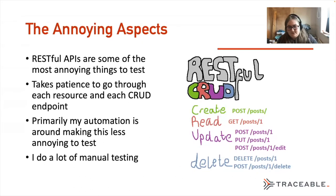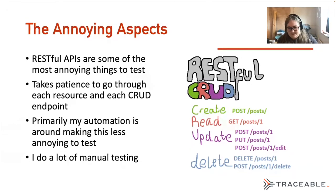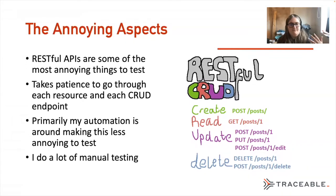For every resource you might have — like on a social media website like Twitter — you've got tweets, replies, accounts, usernames, direct messages, people you follow, people following you. That's seven API endpoints. Then for each of those you have four different CRUD operations, so seven times four. And that's actually a smaller API. A proper API in a mobile app can have literally 50 API endpoints. It takes patience to go through every single one. My automation is primarily about making that process less annoying. I confirm vulnerabilities manually, but getting through all those CRUD endpoints is primarily what I'm trying to automate — it's the boring part of API hacking.